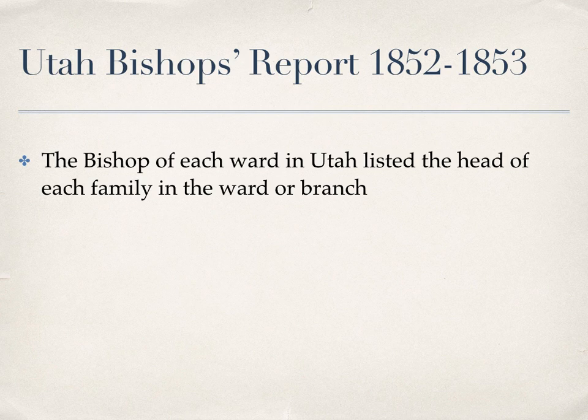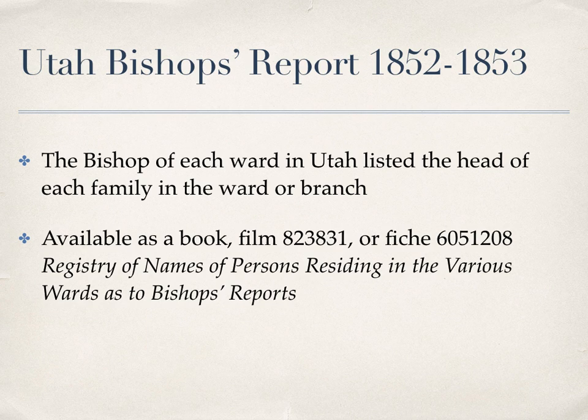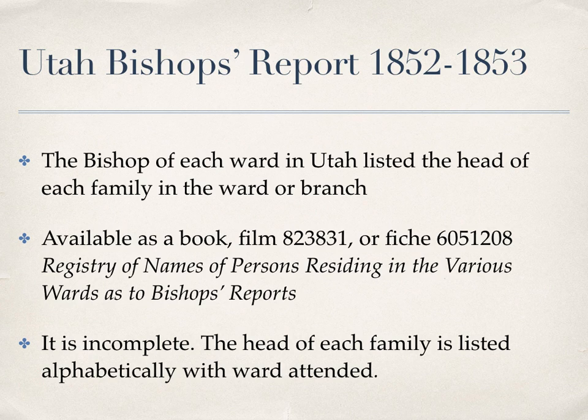Once there, I click on the top link to the Utah Bishops' Report. This is not a true census, but in 1852, the bishop of each ward in Utah listed the head of each family attending his ward or branch. This is available as a book, a film, or a fiche, and it has the name: Registry of Names of Persons Residing in the Various Wards as to Bishops' Reports. It is incomplete — it only includes Utah and lists only the head of each family, listed alphabetically with the ward attended.